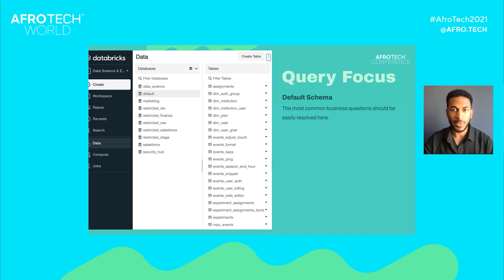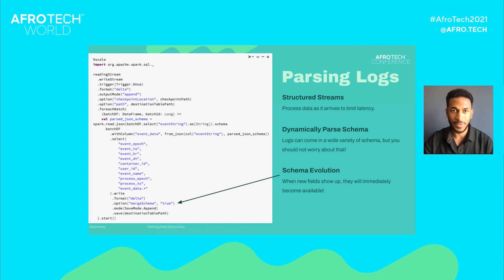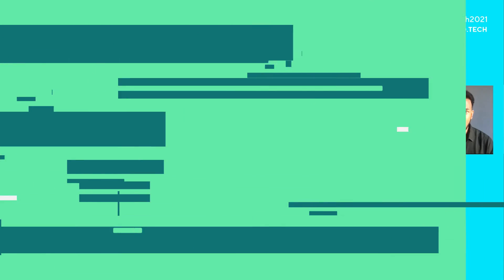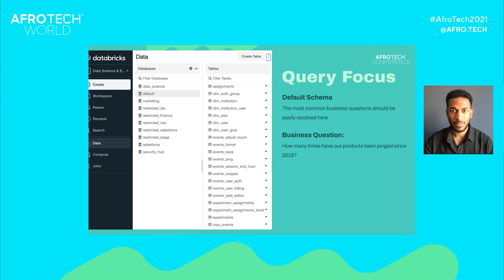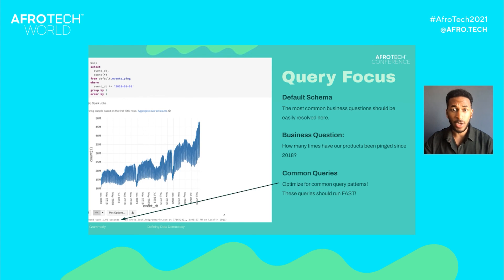After the data is processed, we put the most common data sets in our default schema. These are automatically accessible by all users. You can see we denote dimension tables with a dim underscore prefix and explicitly tell users which events are parsed in our events log tables. Even new users should be able to quickly identify where data lives. Which table would you use to answer this business question: how many times have our products been pinged since 2018? Hopefully you all found it — we're going to use events underscore ping. These questions should be easily answered: nine lines of code with generous spacing. Since we know what queries are going to hit this table, we can optimize for them, so these queries should run fast.